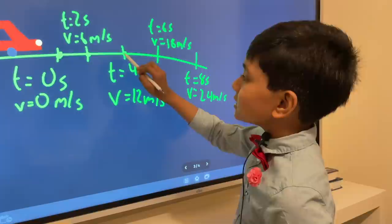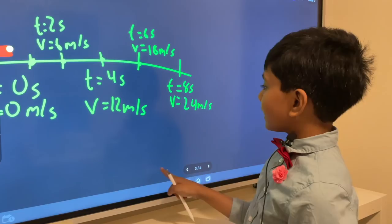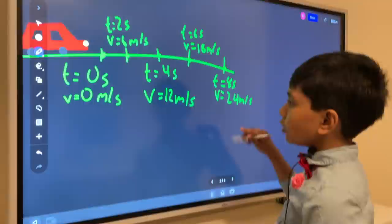Then after 4 seconds, it accelerates to 12. 6 seconds, it accelerates to 18. And after 8 seconds, it accelerates to 24. So now, what we want to do is we want to find the distance traveled during this time.